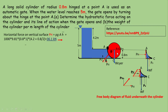This height equals 0.8 m, and we consider unit length of the gate, so area = 0.8 × 1. The density of water is 1000 kg/m³, so specific weight = 1000 × 9.81. h̄ = 4.2 + 0.8/2 = 4.6 m, the distance of the centroid of this plane from the free surface. Therefore, pH = 36.1 kN, acting in the horizontal direction.